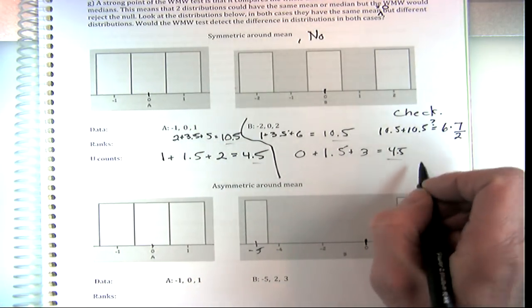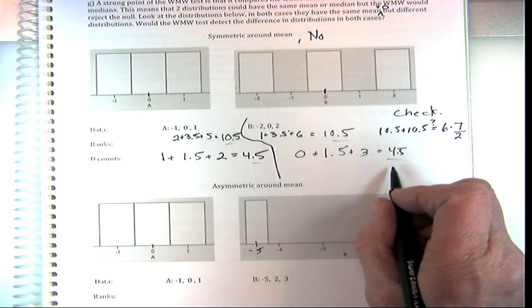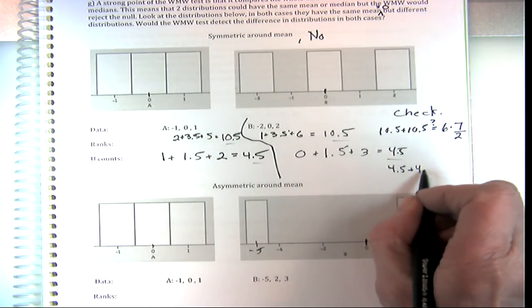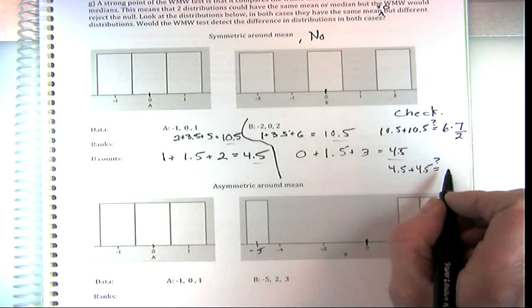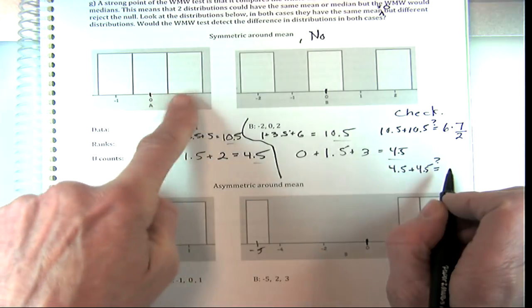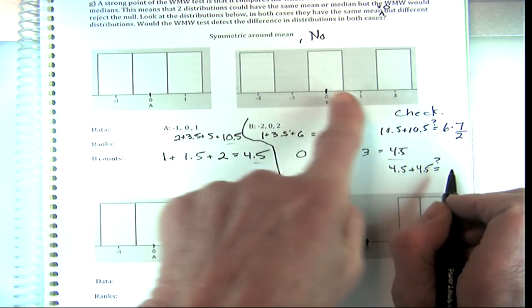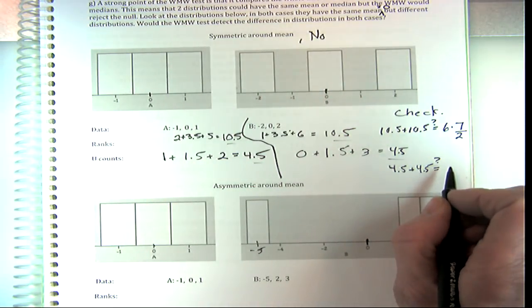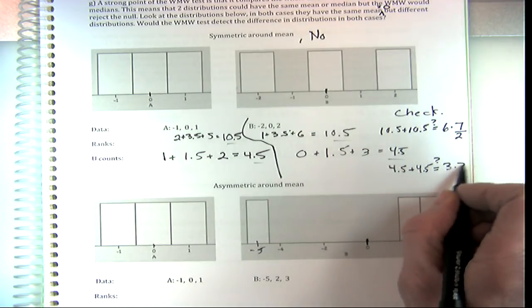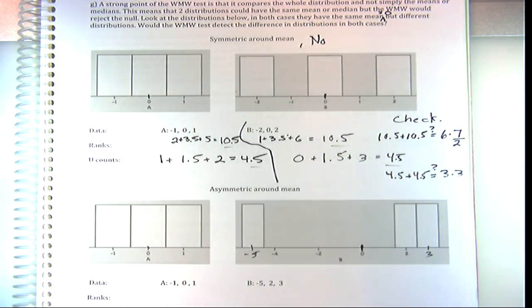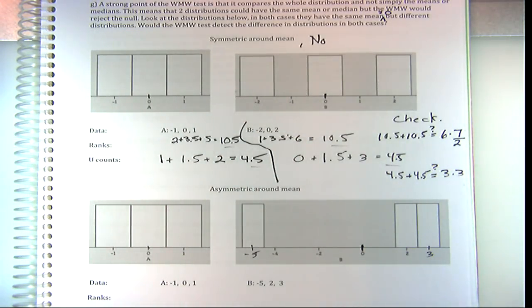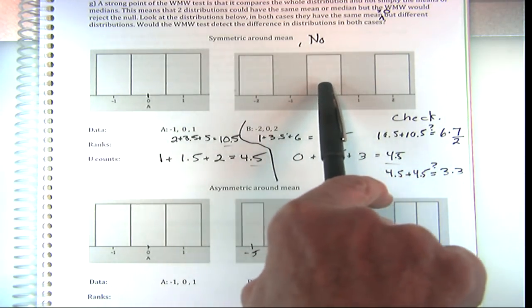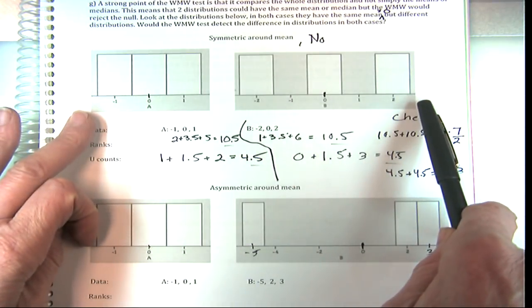So it doesn't work in all cases as I told you. In a case where the distributions are symmetric around the mean, this test will not detect the difference in distributions. But now, how about when it's asymmetric around the mean like here? They both again have means of zero, so the Z and T tests wouldn't detect it. But will the rank sum test?